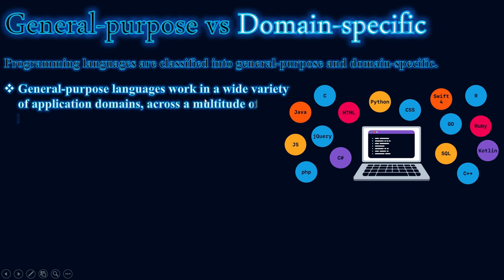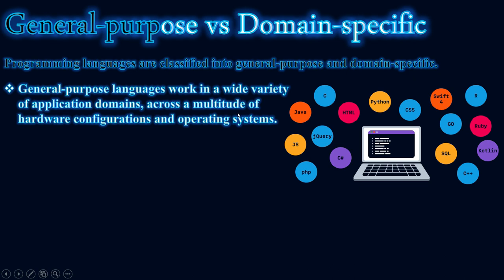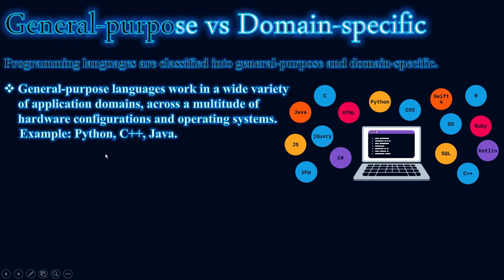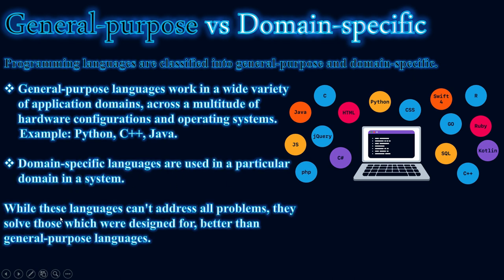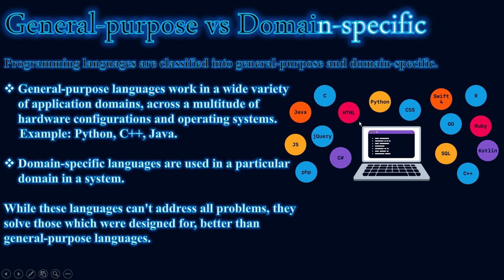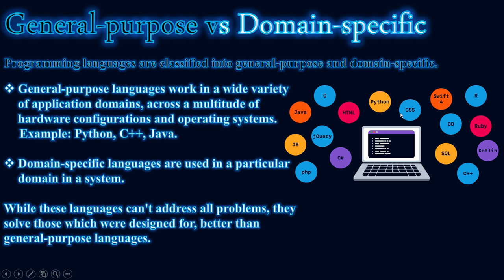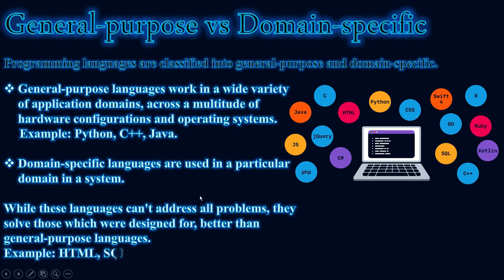General-purpose languages work in a wide variety of applications across different hardware configurations and operating systems — for example, Python, C++, and Java. Domain-specific languages are used in a particular domain or system. While these languages can't address all problems, they solve the problems they were designed for better than general-purpose languages. For example, HTML and CSS are much better for web development than Python, even though you can develop a web application with Python. HTML and SQL are examples of domain-specific languages.